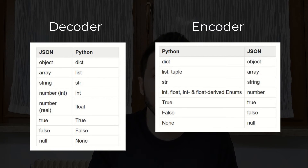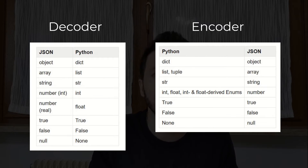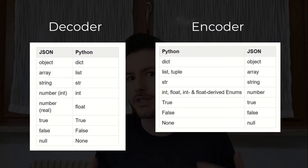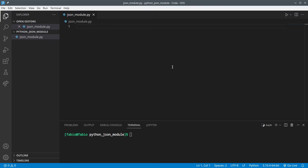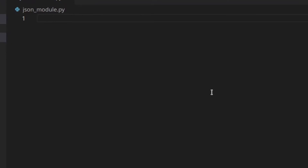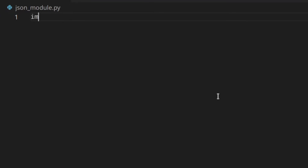So for example, a Python dictionary is converted to a JavaScript object, a list or a tuple is converted to a JavaScript array, and so on and so forth. So first of all, if you want to use JSON, you need to import the module JSON.